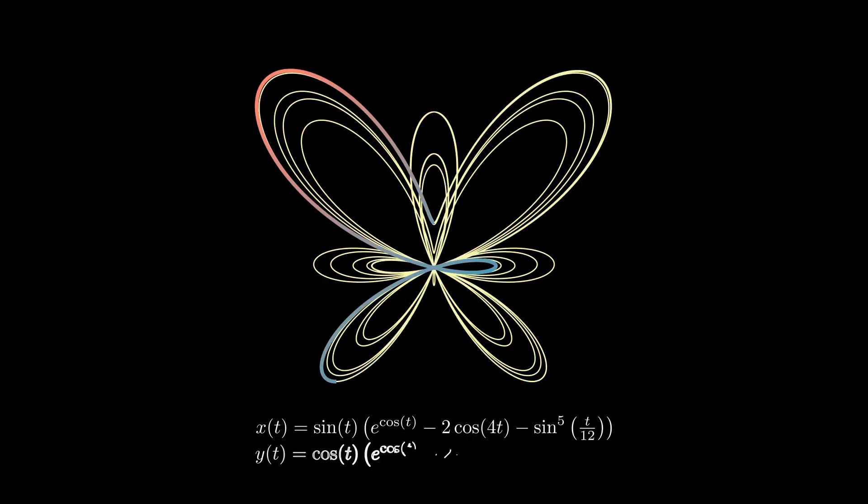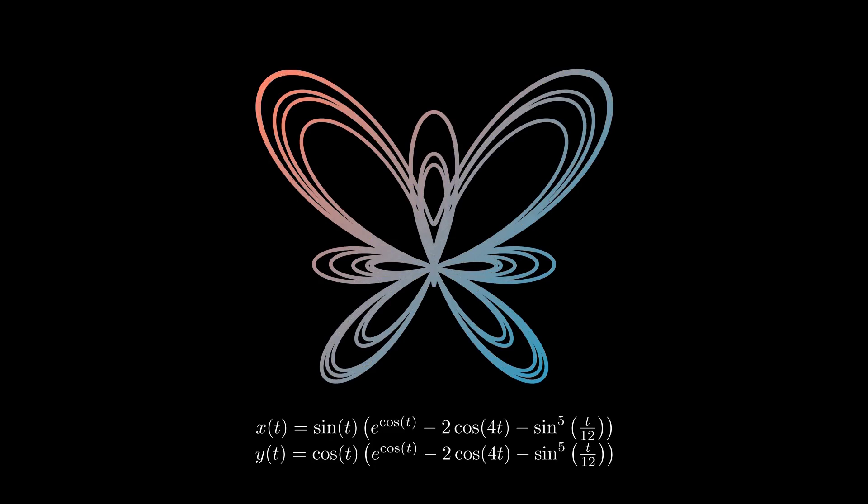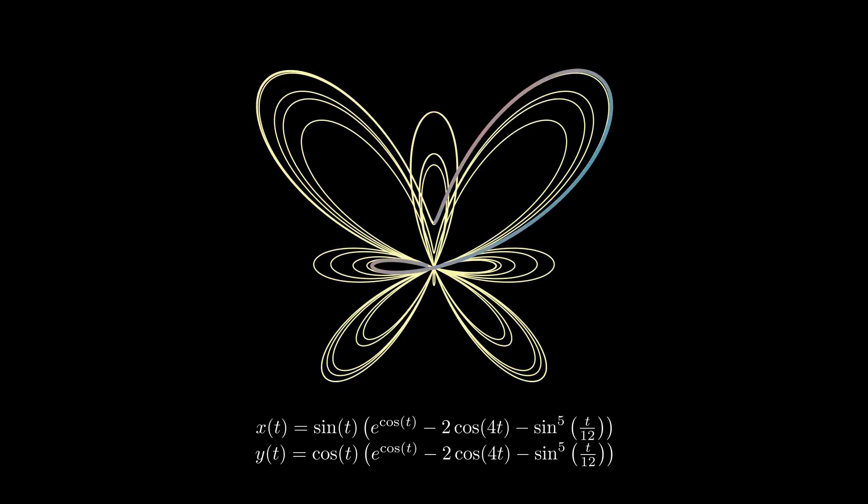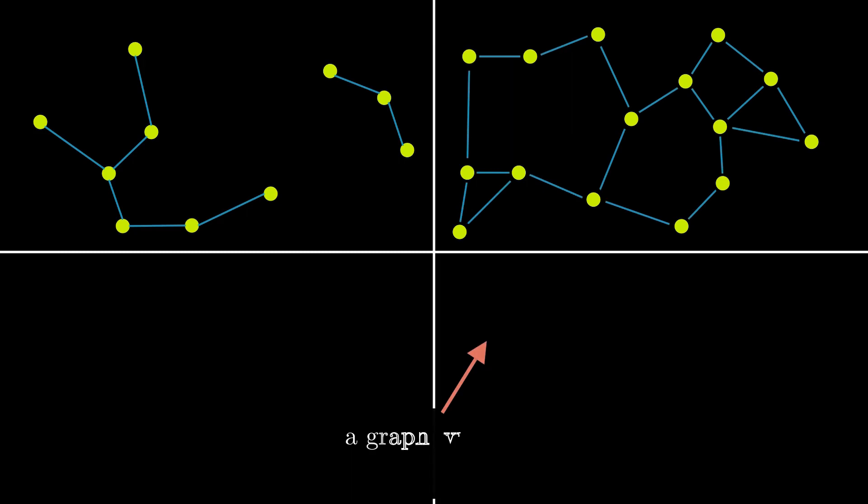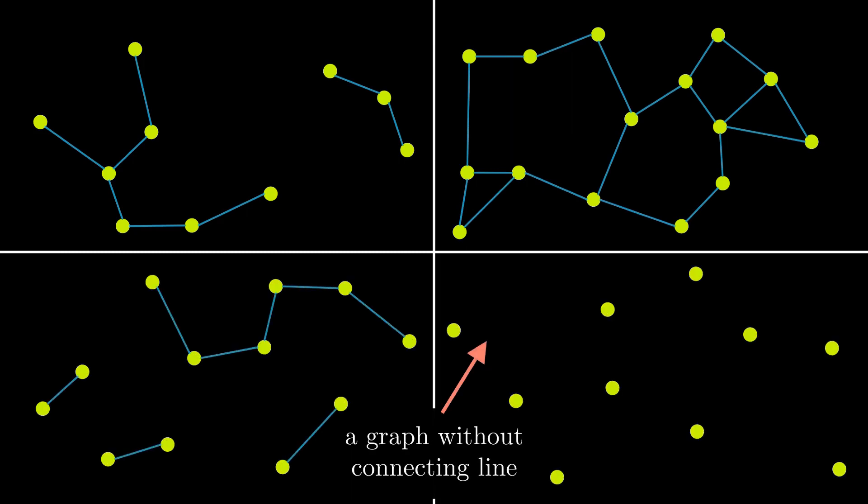But in a mathematician's term, a graph is a collection of points and frequently lines that connect some or all of the points. These are all examples of mathematical graphs. It is possible for a graph to have no connecting line. The existence of a connecting line is not necessary in a graph.